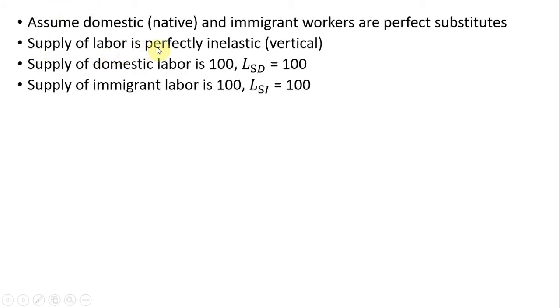The supply of labor is going to be perfectly inelastic, so it just simplifies things a little bit for us. The supply of domestic labor is perfectly inelastic at 100. So L subscript SD, supply of domestic labor, equals 100. And we'll also assume that the supply of immigrant labor is perfectly inelastic and also at 100. They don't have to be the same. In general, the supply of immigrant labor will be smaller, but keep it at a nice round number here.